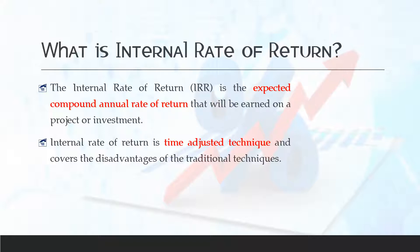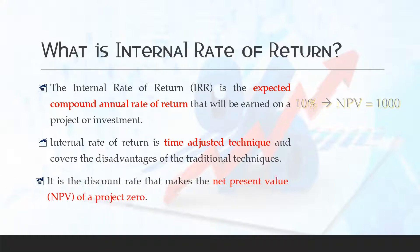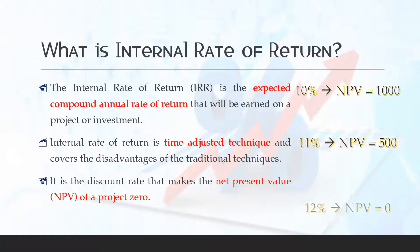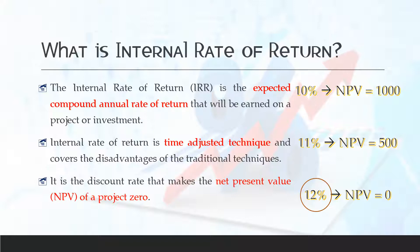The disadvantage of traditional technique is it doesn't give importance to the time value of money. IRR is a discount rate at which the net present value (NPV) of a project is 0. For example, at 10% NPV is 1000, at 11% NPV is 500, and at 12% NPV is 0 — then the IRR is 12% for that particular project.